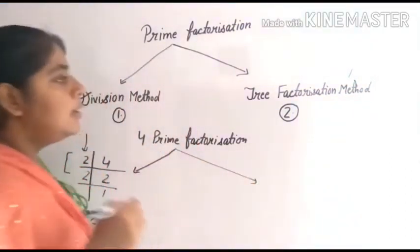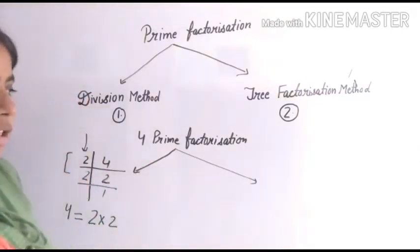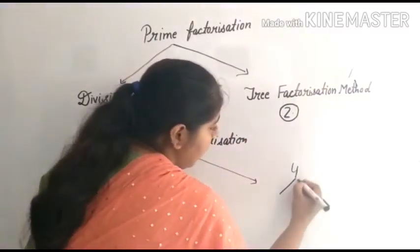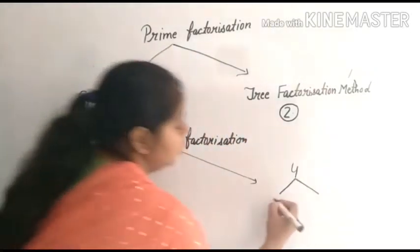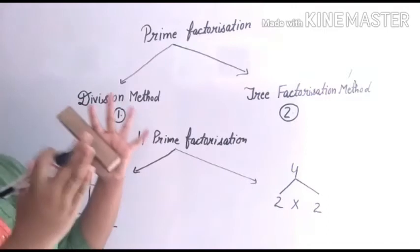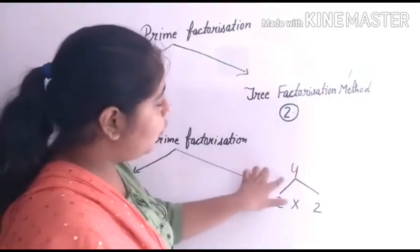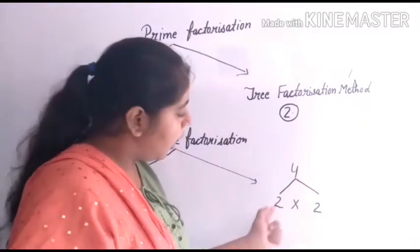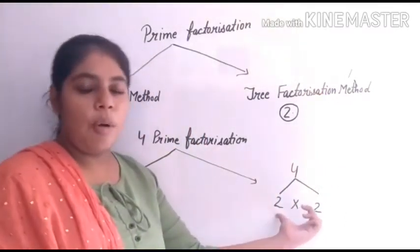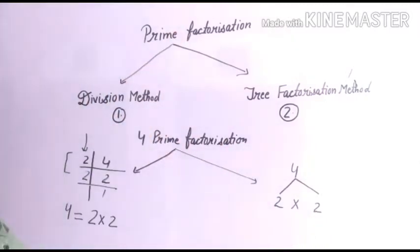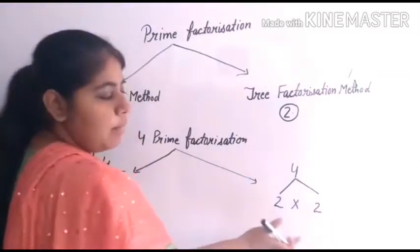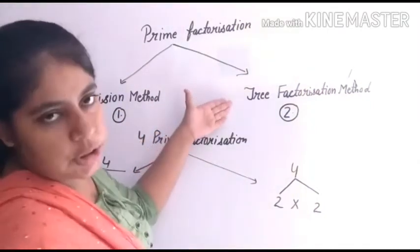Now let's do the tree factorization method. We have 4. How many parts can we break it? We can break it: 2 multiplied by 2. This is the tree and these are the branches. We have to break these branches — this type of 4. We break 4 as 2 multiplied by 2. Now this form is our composite number. We have to break it into prime numbers. And the definition of prime factorization is that when it breaks down to primes, then it stops.